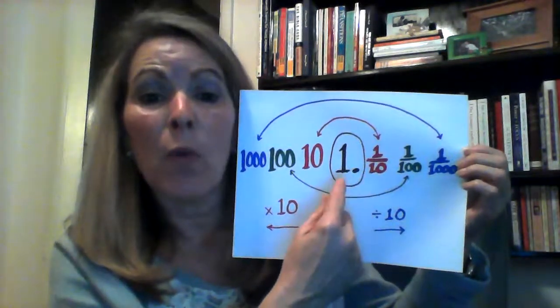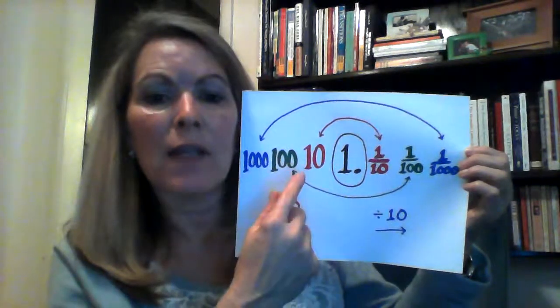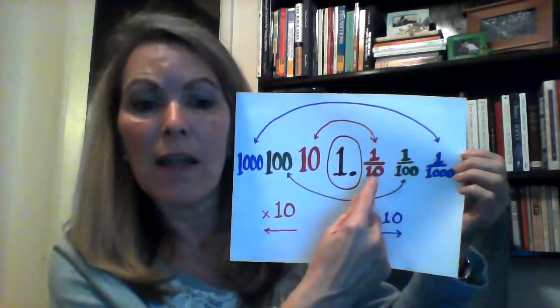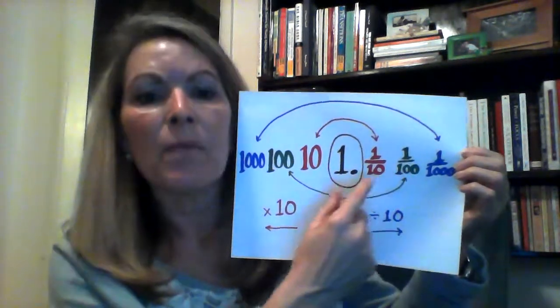Same thing with the hundreds—the hundreds are ten tens, but over here we have our tenths divided into ten pieces, which become hundredths.